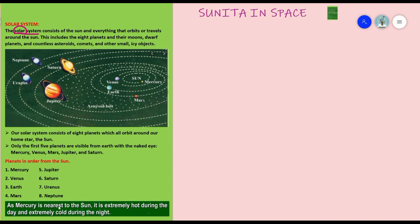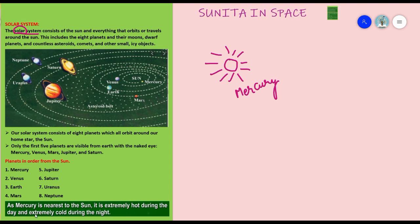As Mercury is nearest to the sun — as you can see in the picture here, this is the sun, and the closest planet to the sun is Mercury — so it is extremely hot during the day and extremely cold during the night.